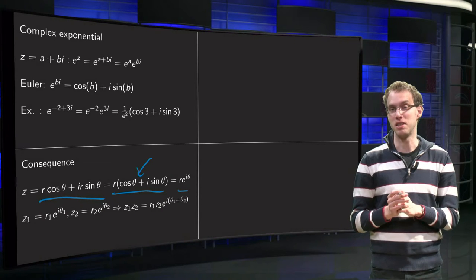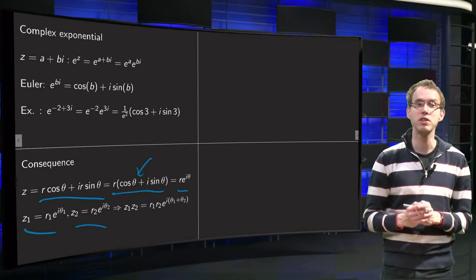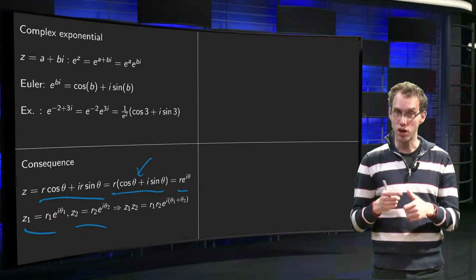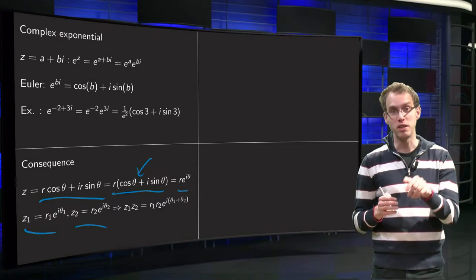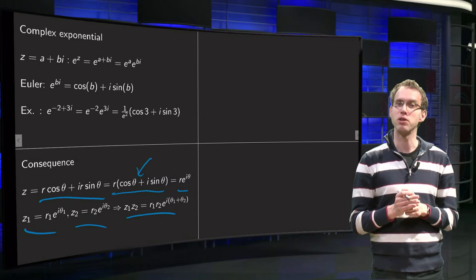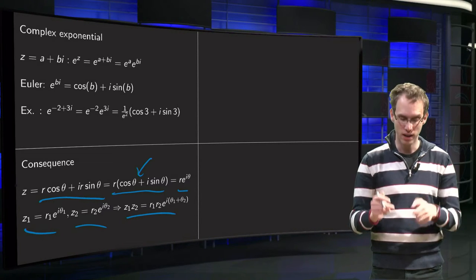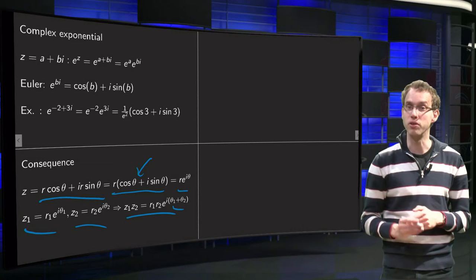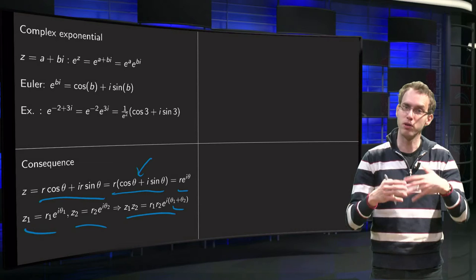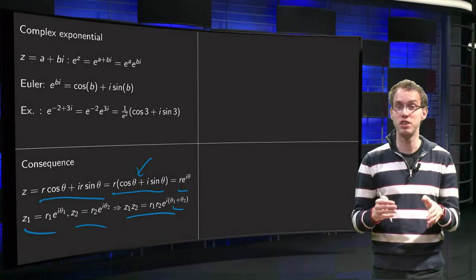Writing complex numbers in exponential form has advantages for memorizing formulas. For example, if we have z₁ = r₁ e^(iθ₁) and z₂ = r₂ e^(iθ₂), then the product is immediately r₁ r₂ times e^(iθ₁) times e^(iθ₂), and using normal rules for exponentials we can add the exponents to get e^(i(θ₁ + θ₂)). This multiplication formula, which previously required manipulations with sines and cosines, can now be seen straight away.